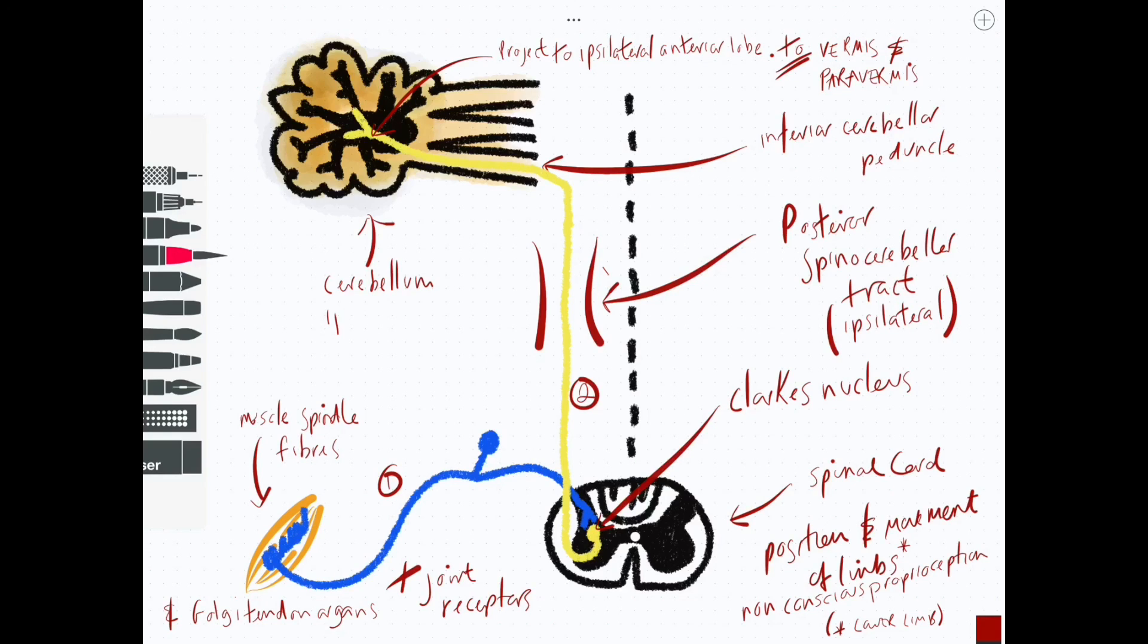It's also worth now mentioning what happens when we get a lesion to the spinocerebellar tract, where we get something known as ataxia, and this is a loss of coordination.